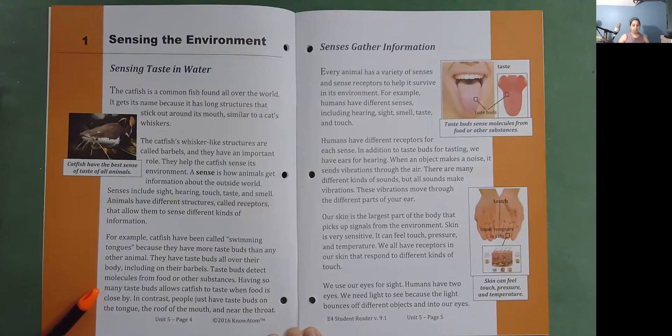Taste buds detect molecules from food or other substances. Having so many taste buds allows catfish to taste when food is close by. In contrast, people just have taste buds on the tongue, the roof of the mouth, and near the throat. Catfish have the best sense of taste of all animals.